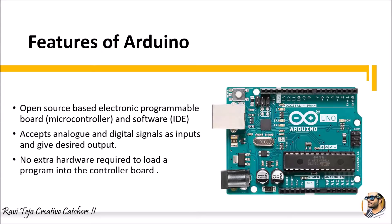Coming to the features of Arduino, this is one type of Arduino — basically a development board with a microcontroller on it. It is an open source based electronic programmable board. It comes in two parts: Arduino hardware, which is the development board with a microcontroller, and the software in which we write the program, compile it, and upload it to the board.